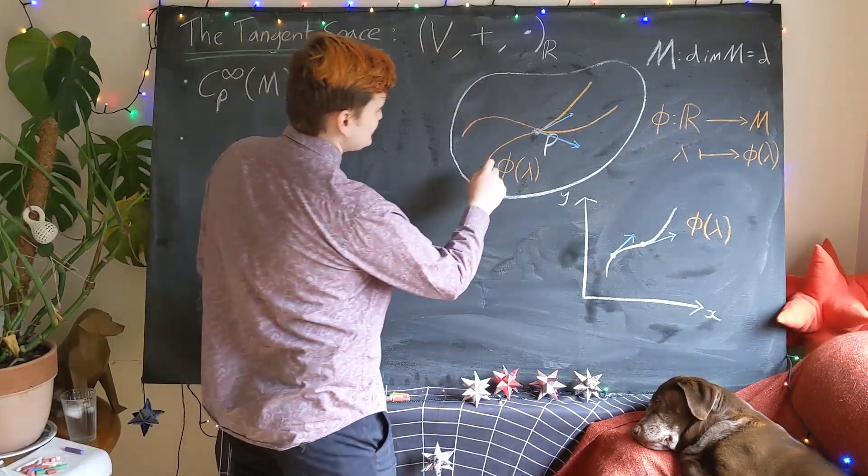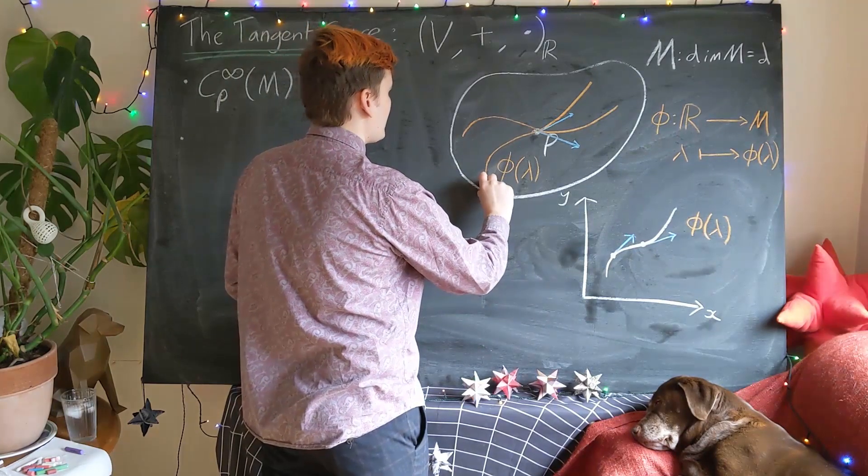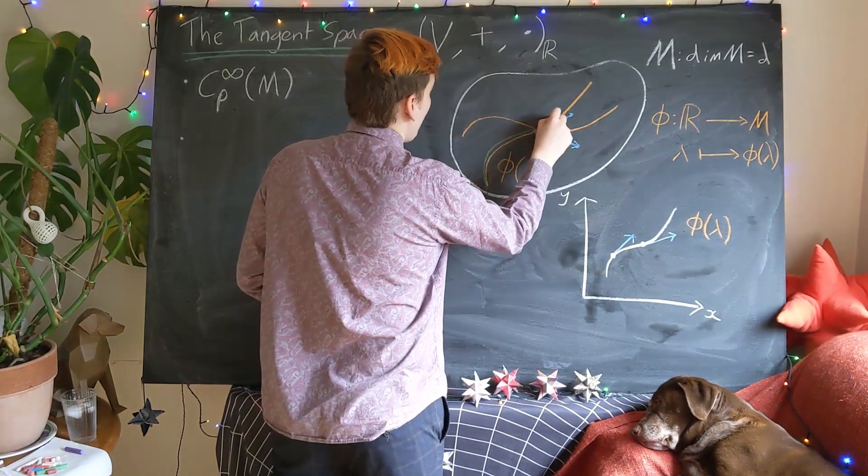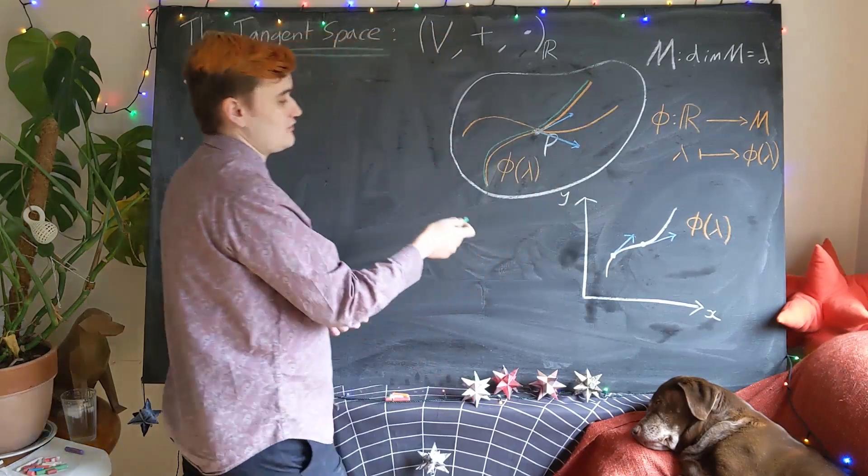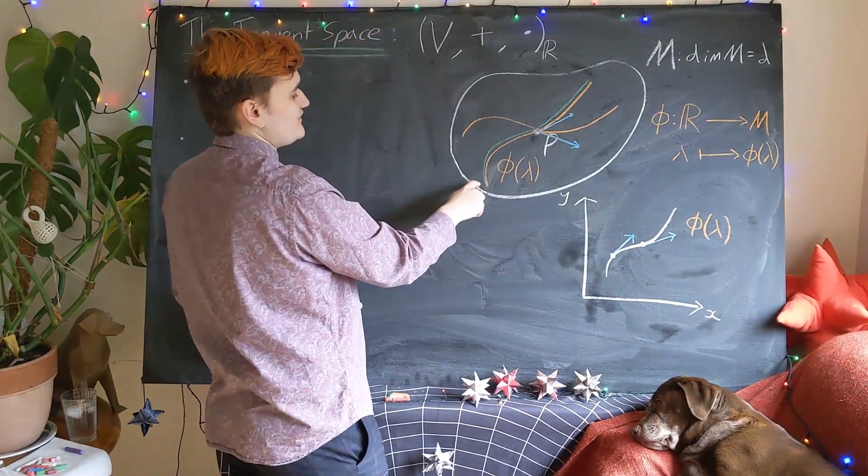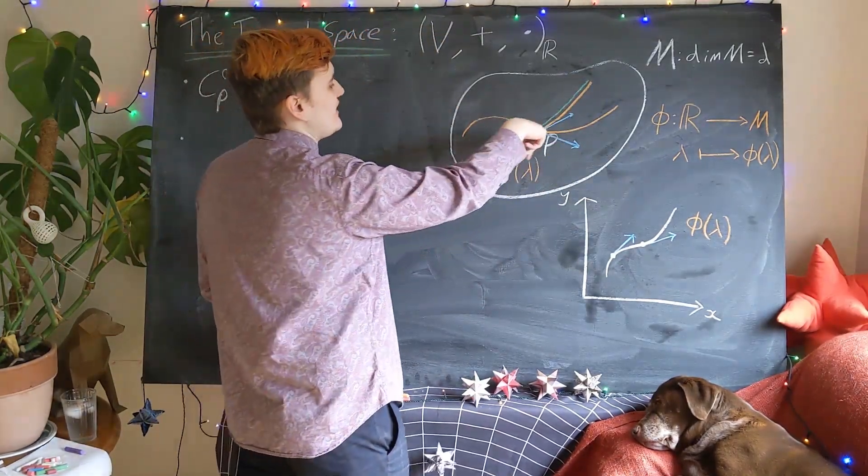And its magnitude is going to be dependent on essentially how fast the parameter lambda runs through the curve. We could, for example, consider a curve which follows out the exact same path or trajectory through the manifold.